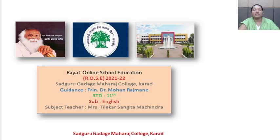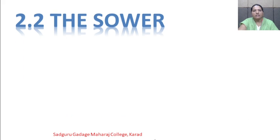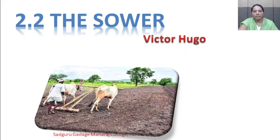Welcome students to our Red Online School Education, the Rose Project of 2021-22. I am Tidekar S.M. from Sadhguru Gargiye Maharaj College Karat. My subject is English. Today we are going to see the second part of the poem 2.2, that is 'The Sower', which is written by Victor Hugo.